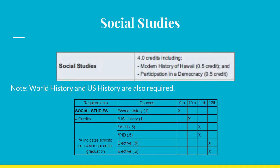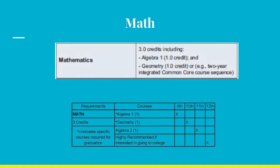Social Studies also requires 4 credits with specific credits earned in World History, 1 credit; U.S. History, 1 credit; Modern History of Hawaii, 1 credit; and Participation in Democracy, 1 credit. Once again, failure to earn a Social Studies credit in any one year will result in taking two Social Studies courses in the next year or so.